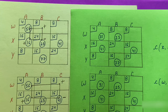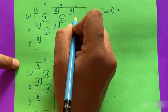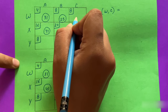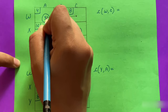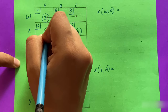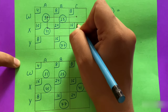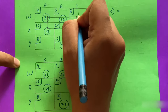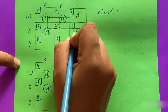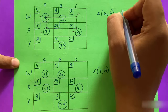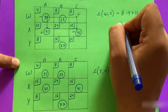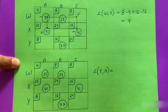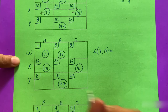We repeat the process. For the WC cell, we trace the closed loop, stepping directly to the next stone square. Assigning signs: improvement index = 8 − 4 + 16 − 16 = +4. For the YA cell, we trace the loop — we can move in two directions; choosing one path we step through the stone squares and return home. Assigning signs: improvement index = 8 − 16 + 8 − 4 = −4.